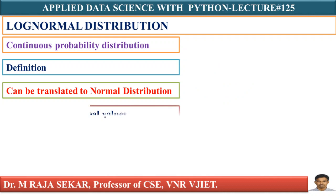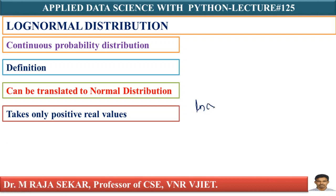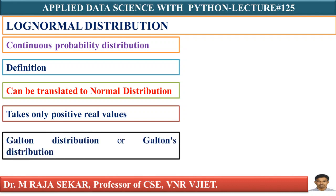A random variable which is log normally distributed takes only positive real values, because the natural log ln(X) is defined only when X is a positive real value — X cannot be negative or zero. Log is defined only for positive real values. Because of this, it can be modeled in different disciplines. This distribution is also known as Galton's distribution.